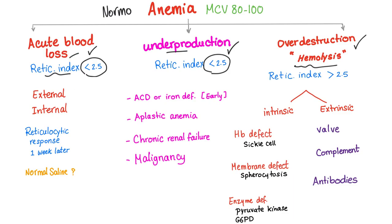In acute blood loss, the cause can be external, such as knife wounds, car accidents, or open fractures; or internal, such as a ruptured spleen or ruptured abdominal aortic aneurysm. Acute blood loss will lead to hypovolemic shock — hypo meaning less volume.